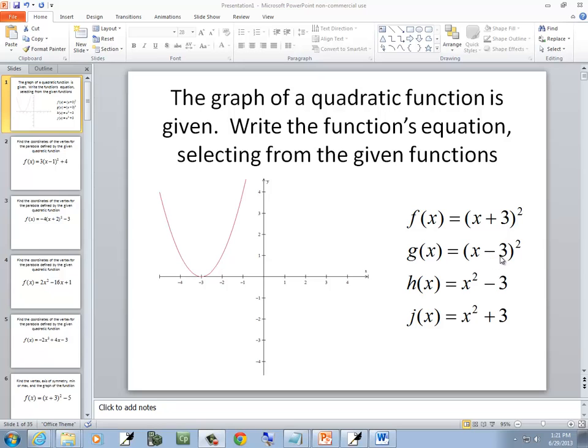This g(x), the minus 3 makes us think left 3, so it's really going right 3. Remember, if the number's inside with the x, it's left or right opposite what you think, unless you think backwards.